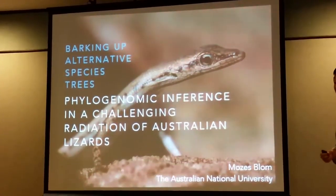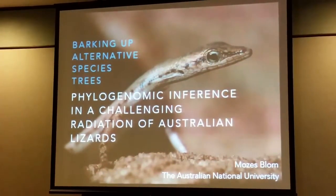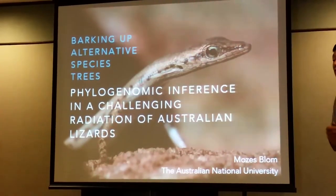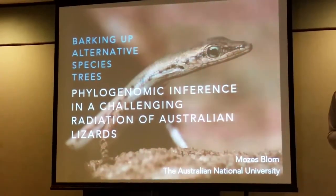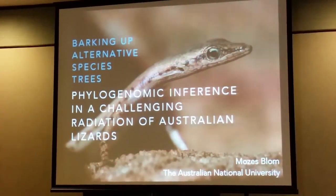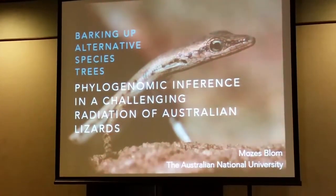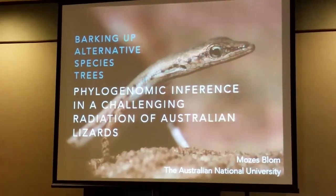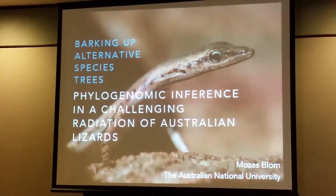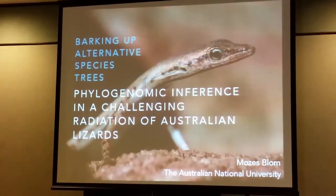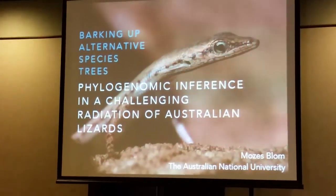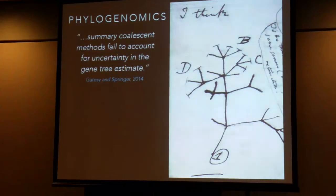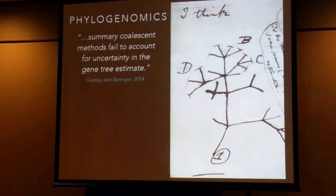By incorporating a multi-species coalescent into species tree estimation, we can try to accommodate this heterogeneity in gene tree signals. But full coalescent-based methods such as StarBEAST or BEST are computationally extremely strenuous, and they are not very applicable to many of our phylogenomic-size datasets. A shortcut has been developed called summary coalescent methods, where you first infer the gene trees, and based on the distribution of gene trees, you infer the species tree.